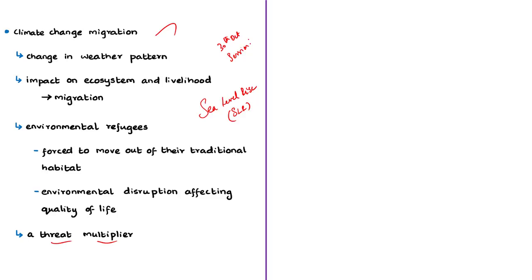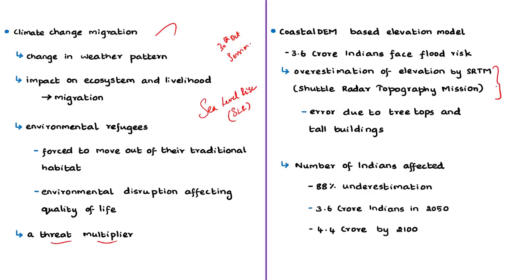At present, estimates of flooding risk are based on maps taken by the Shuttle Radar Topography Mission — a NASA mission that captures high-resolution digital elevation data of the entire earth. As per the new estimates based on Coastal DEM, the number of Indians affected by rising sea levels may have been underestimated by as much as 88 percent. If global emissions continue to rise, almost 36 million (3.6 crore) Indians would face annual flooding by 2050, which may increase to 44 million (4.4 crore) by 2100. This data is much larger than previous estimates.